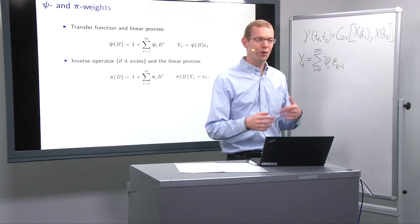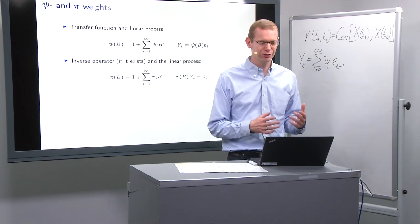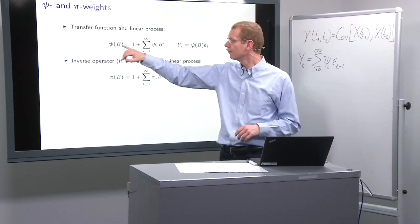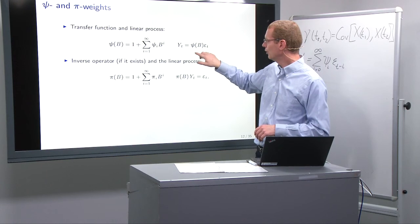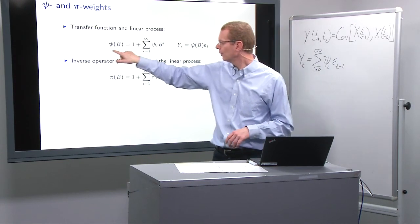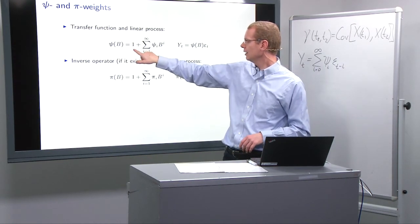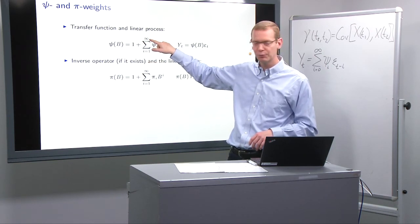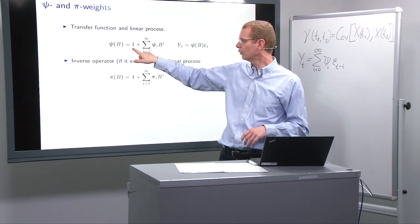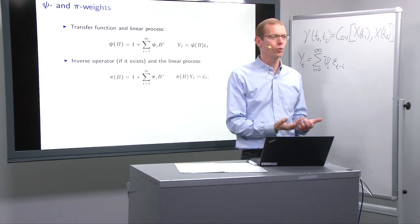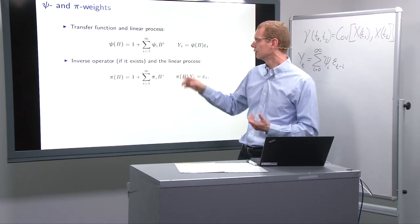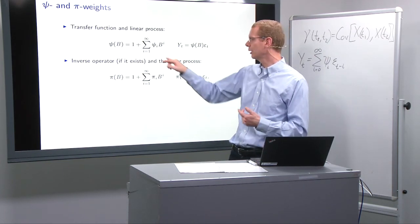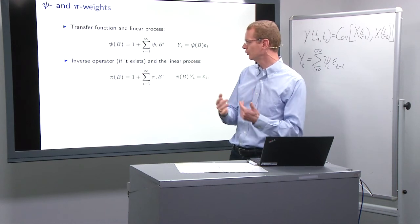Now, what we looked at last time was the so-called backward shift operator B. We have it here. If we look at this, what we have here, I go from i equals one to infinity—before we started from zero, but I go from one—and then I have the operator one as a leading term here, which is equivalent to what we did on the previous slide, namely to assume that ψ_0 equals one.